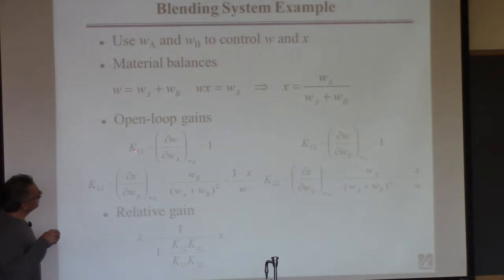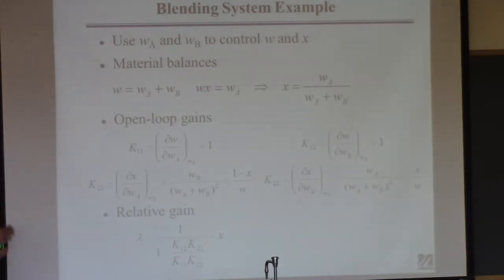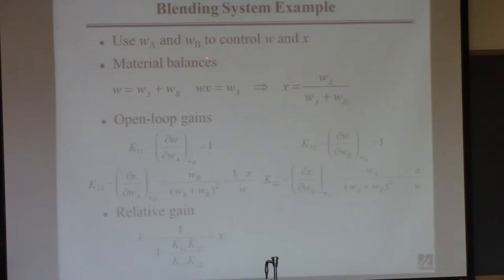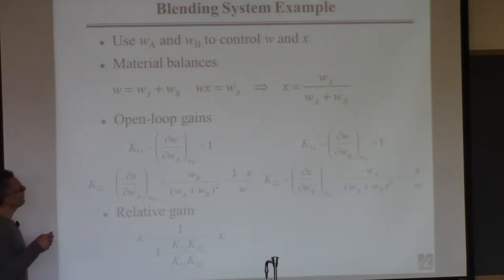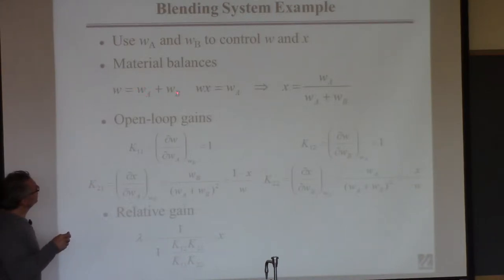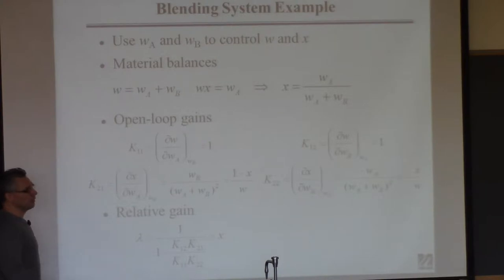This is easy enough. What I'm trying to do is get the gain matrix for this problem. I need the gain matrix because I need that to calculate the relative gain. The goal is to get what is the gain between these two inputs — WA and WB — and these two outputs — W and X. Obviously it's pretty easy to calculate the gains between WA and WB and W. They're 1 and 1. They're just the coefficients.